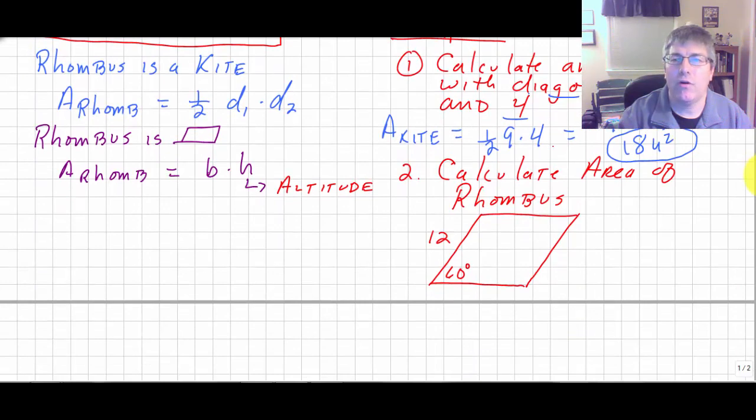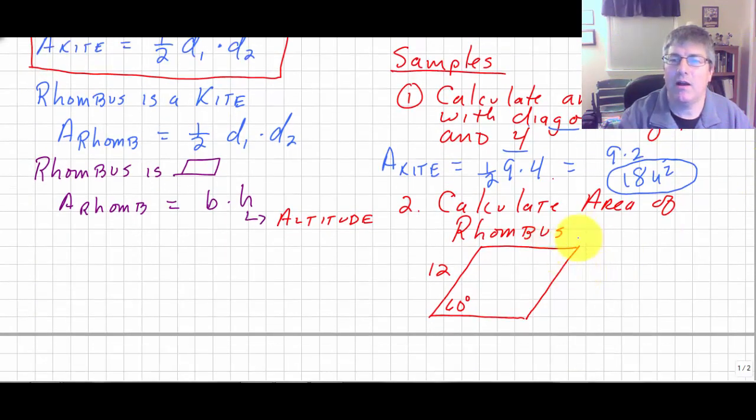You can also calculate the area of a rhombus. We're given this rhombus. It's got a side of 12, so we know all the sides are 12. However, this is not base times height. Our area wouldn't be 144. We can't go 12 times 12. In fact, we don't have enough information to calculate the diagonals either.